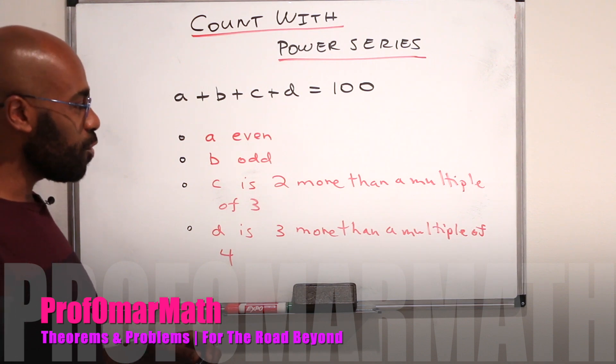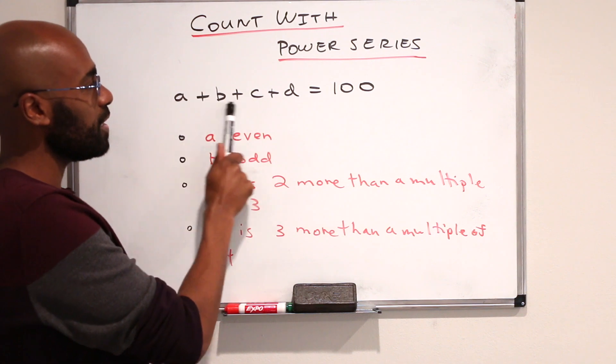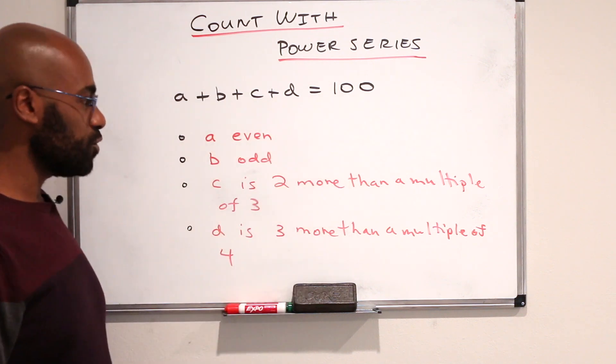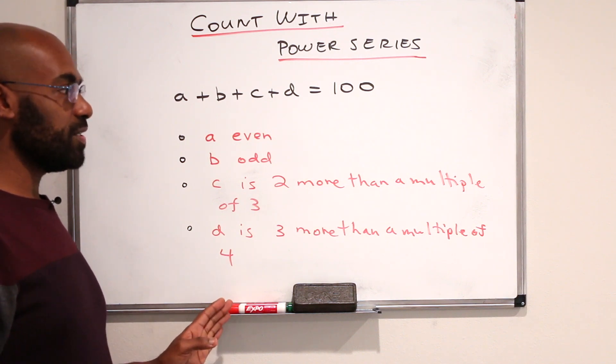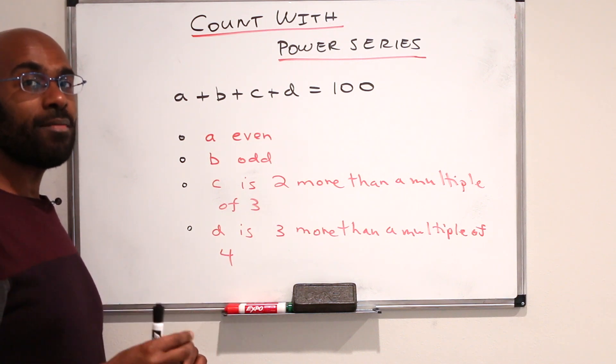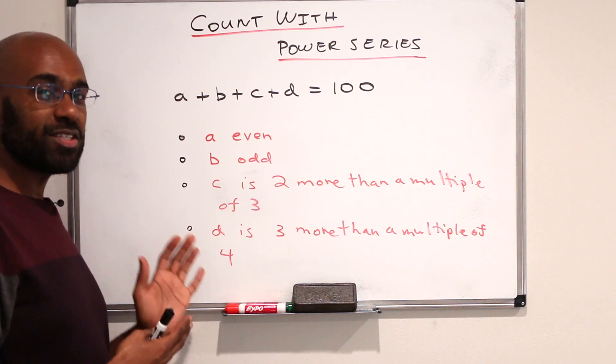Today we're going to look at how to count with power series. The question we're motivated by is this question here, where we have non-negative integers A, B, C, D summing to 100 with these restrictions on each of the individual numbers. Before getting into the details, I want to review some facts about power series.